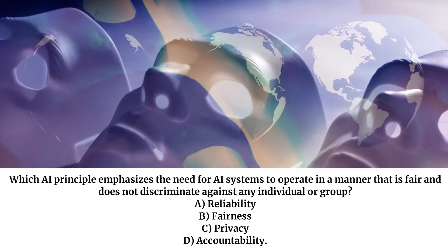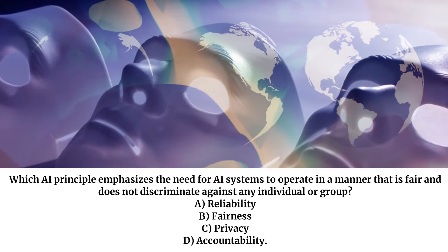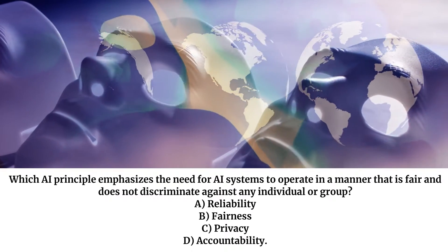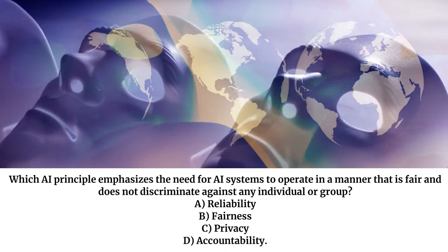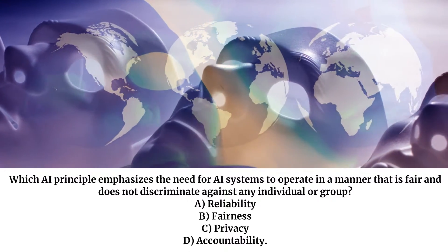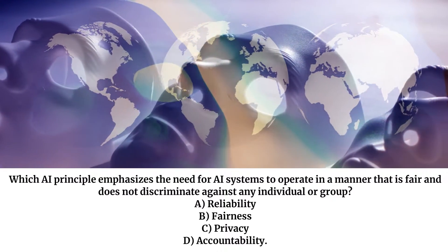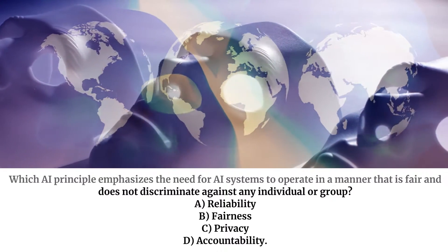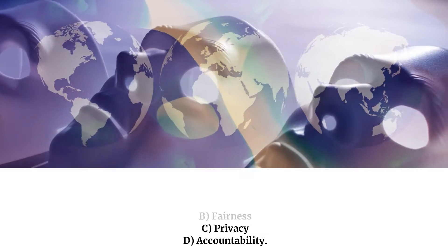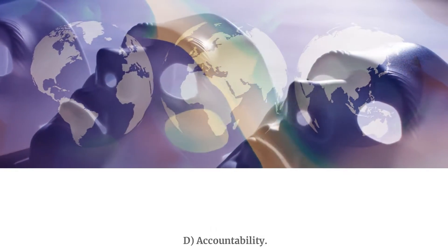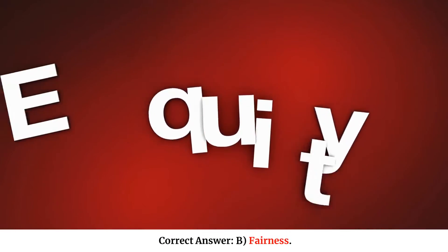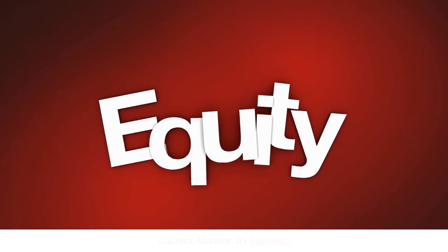Which AI principle emphasizes the need for AI systems to operate in a manner that is fair and does not discriminate against any individual or group? A. Reliability. B. Fairness. C. Privacy. D. Accountability. Correct answer: B. Fairness.